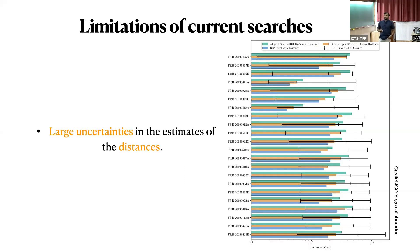This is primarily because of various limitations of these searches. One of them being there's a large uncertainty in the measurement of luminosity distance. As you can see in the plot on the right, the black horizontal line corresponds to the error on the measurement of luminosity distance for FRBs. These are actually more than an order of magnitude. Similar is the issue for the measurement of luminosity distance for gravitational signals as well.